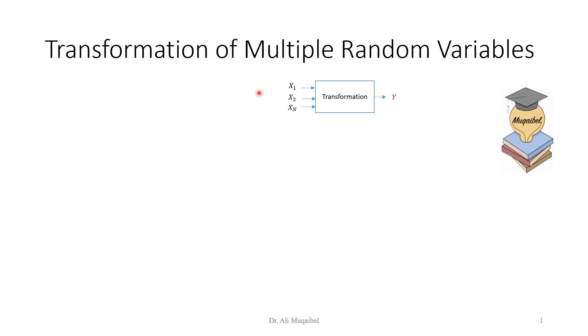We have seen transformation of a single random variable, where we have x here to go through a transformation and we get y. Given the pdf and the transformation, our job was to find the pdf of y. But now, we have transformation of multiples of random variables. We could have one at the output, or we could have y1, y2, y3. We're dealing with multiples of them.